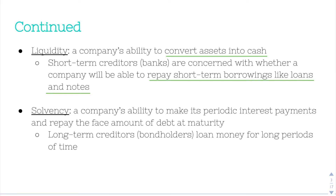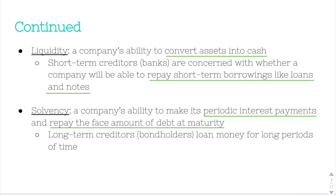Solvency is a company's ability to make both its periodic interest payments and repay the face value of debt at maturity. Long-term creditors that loan money for long periods of time are concerned with solvency — this is typically bondholders. So if they do a 10-year bond or a 20-year bond, they want to know they're going to be getting their interest payments each year and that they'll receive the face value of debt at maturity.